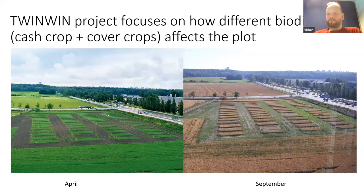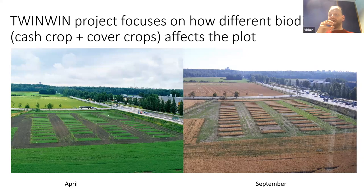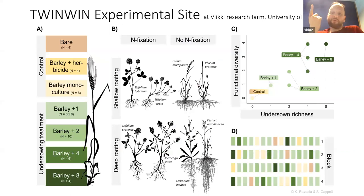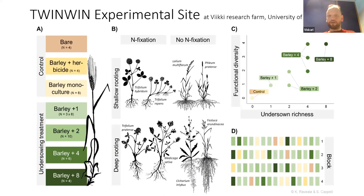So the TREATISE project, which this work is a part of, is a primarily University of Helsinki led project where the idea is to look at, try to examine in one field in different plots, how biodiversity and the level of biodiversity affects those plots at a multitude of levels — from soil health to microfauna to crop growth, crop health and resistance, carbon allocation, and also the carbon stocks generally in the soil.